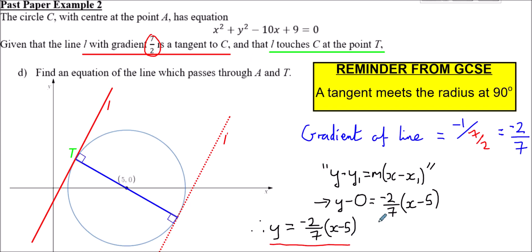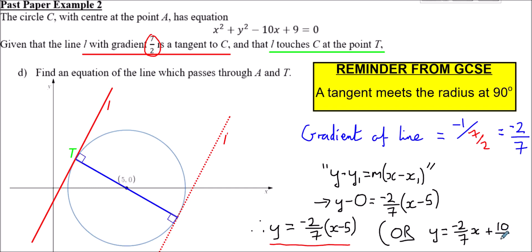Alternatively, you could write this in the form y = mx + c: y = -2/7 x + 10/7, since -2/7 × (-5) = +10/7. Either form is acceptable, though the factorised form is probably the easiest.